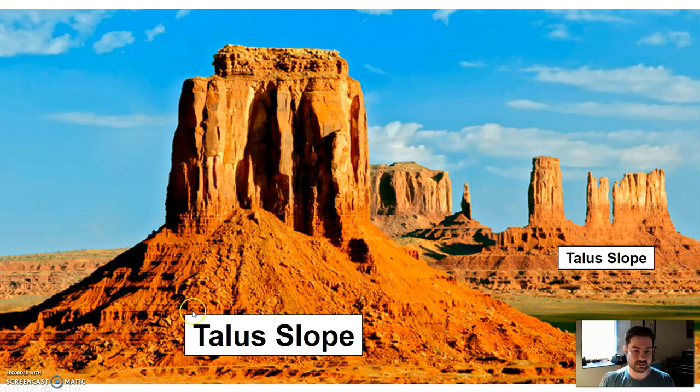You can see here this rubble buildup is a talus slope. So, it's very steep, loose material, very hard to climb, very loose, very steep. It's not fun to try and climb up a talus slope. Here's another one back here, and back there, and here's another one over here. They accumulate at the base of features. You can see they don't extend very far out.